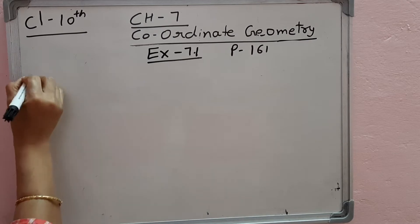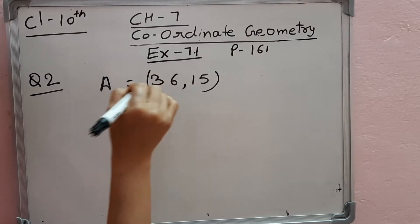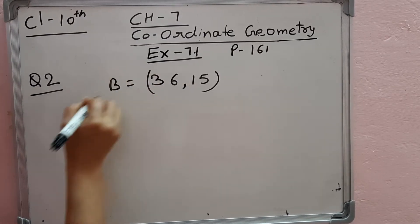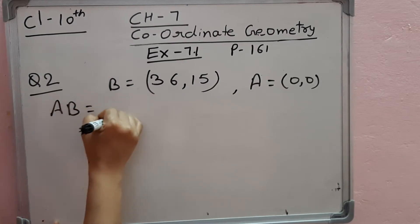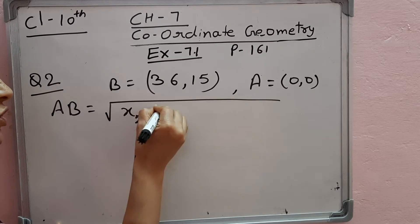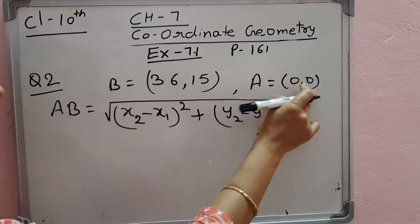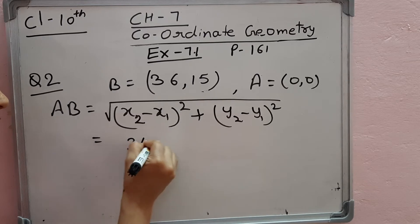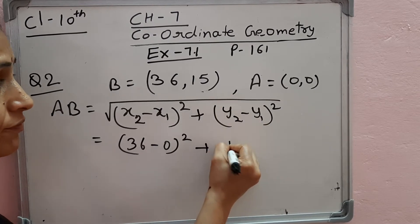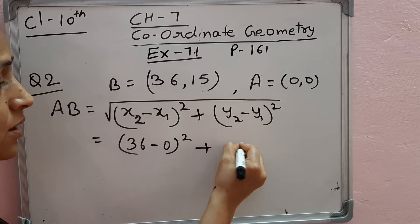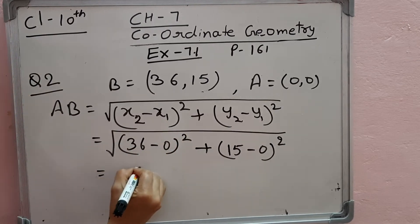Question number 2: distance between (36, 15) — let this point be B and A is (0, 0). You can find the distance between them. So AB is equal to square root of the distance formula: (X2 minus X1) whole square plus (Y2 minus Y1) whole square. X1, Y1, X2, Y2. So X2 is 36 minus X1 is 0, so (36 minus 0) whole square, plus Y2 is 15 minus Y1 is 0, so (15 minus 0) whole square.